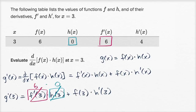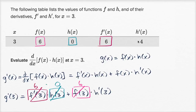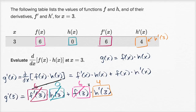Now f of three — when x is equal to three, f of three is equal to six. And h prime evaluated at three — h prime of x when x is equal to three is equal to four. So this evaluates to six times zero, which is zero, plus six times four, which is equal to 24. And we're done.